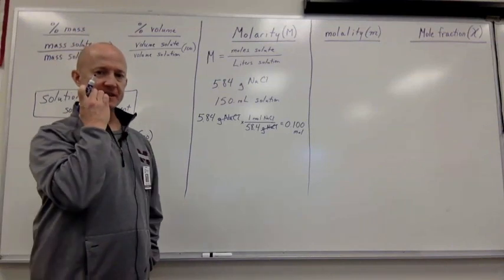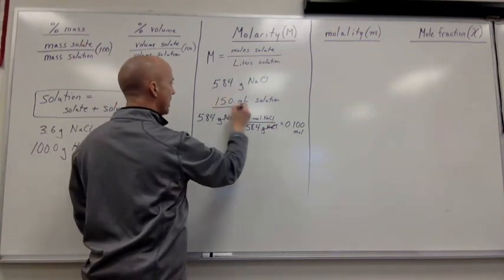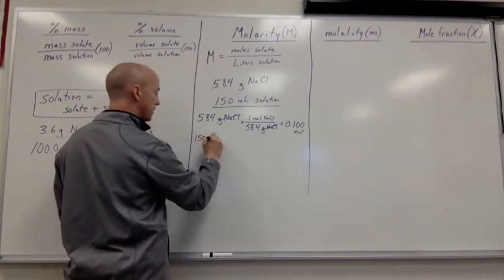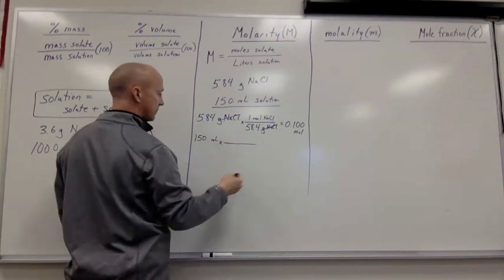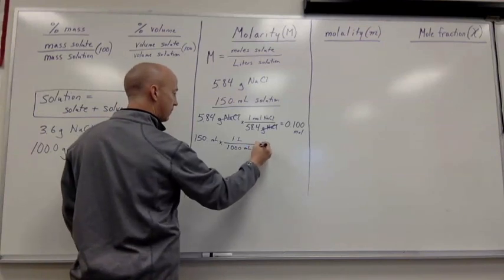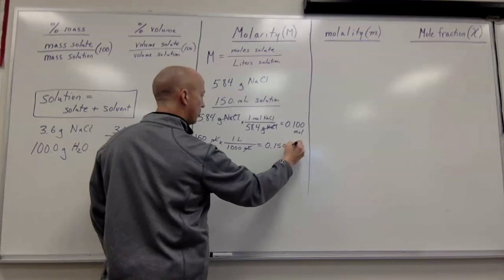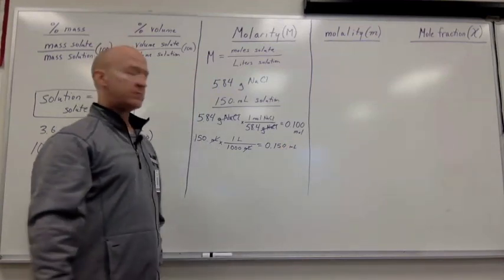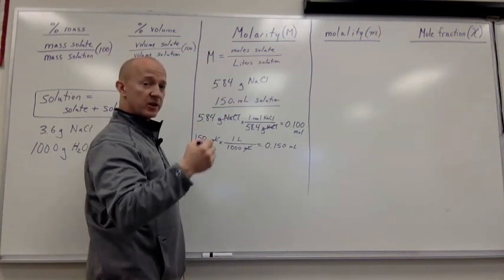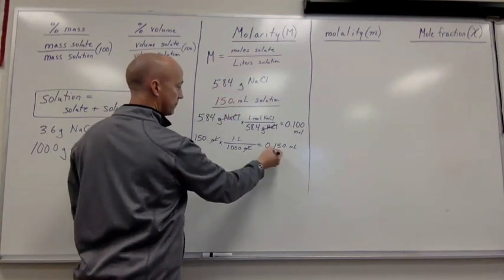So now I have my number of moles. I just need my solution, my liters of solution. All right? So I have my moles. I need liters. Well, they've given me 150 milliliters of solution. So I got to convert that to liters. 150 milliliters. And if I use dimensional analysis, I know that one liter is equal to 1,000 milliliters. All right? Milliliters cancels. I'm left with liters. This gives me 0.150 liters. Okay? Now, a little quick way to do this, if you're looking at this and you want to do it quickly, you can just, if you're going from milliliters to liters, just take the decimal point and move it three places to the left. One, two, three. Just like we have right there.